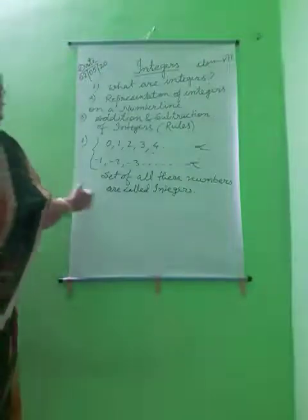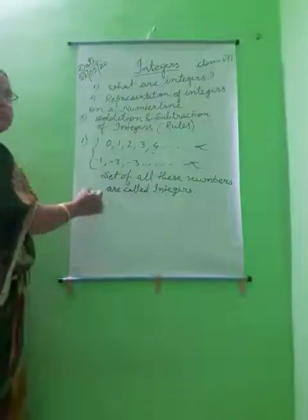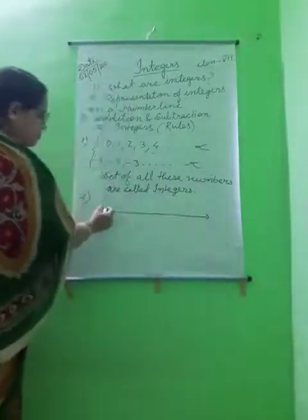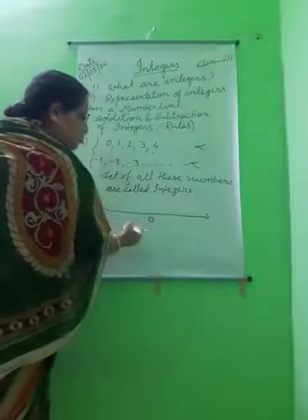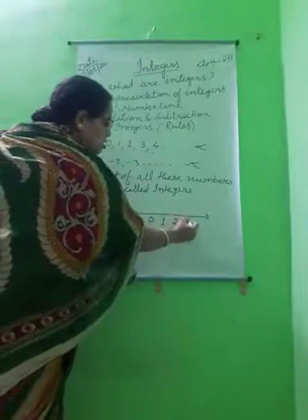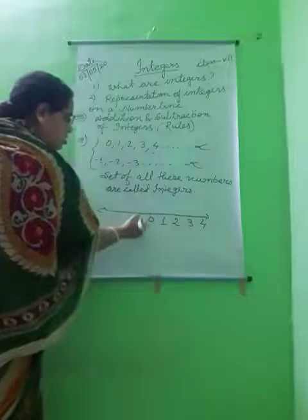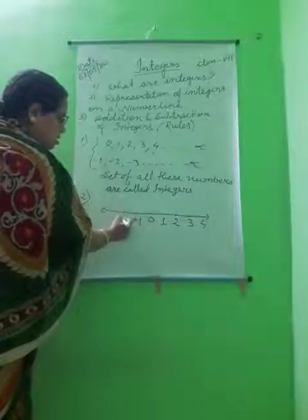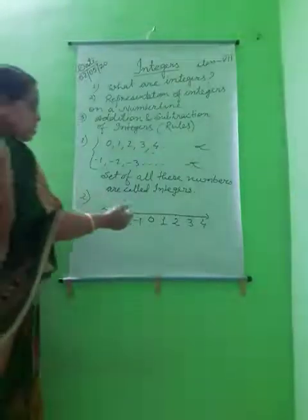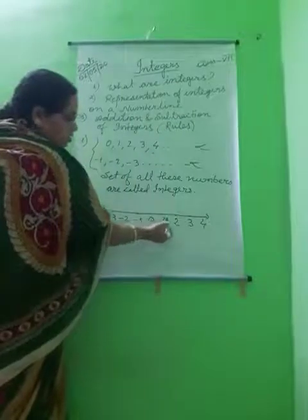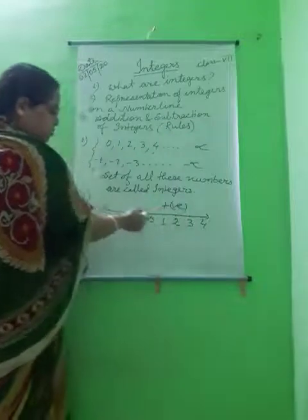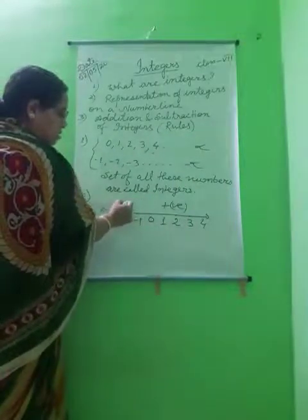Now we plot a number line. In the middle we put a 0, then 1, 2, 3 and so on to the right. And minus 1, minus 2, minus 3 to the left. The right of 0 are the positive numbers and from the left of 0 are the negatives.